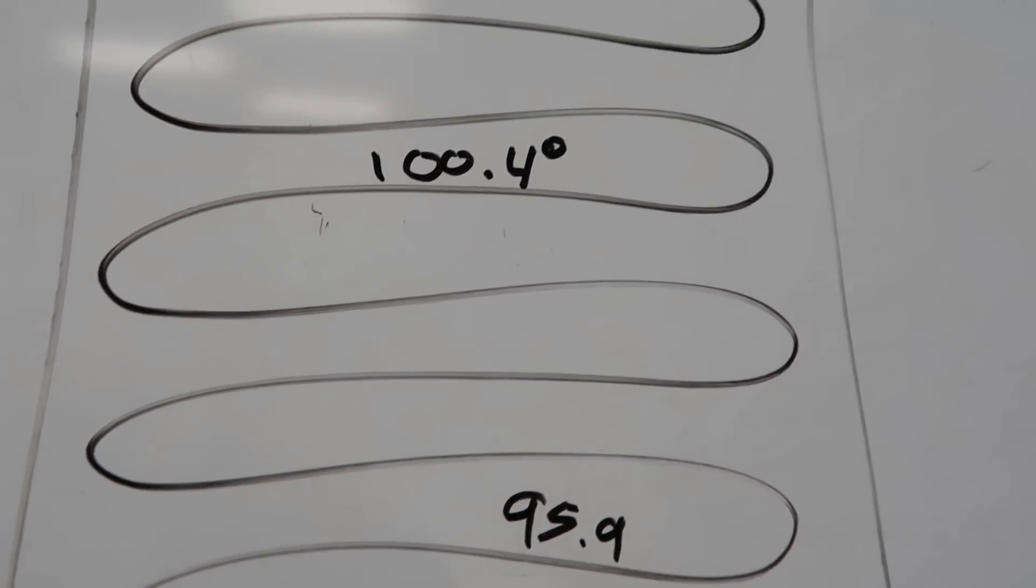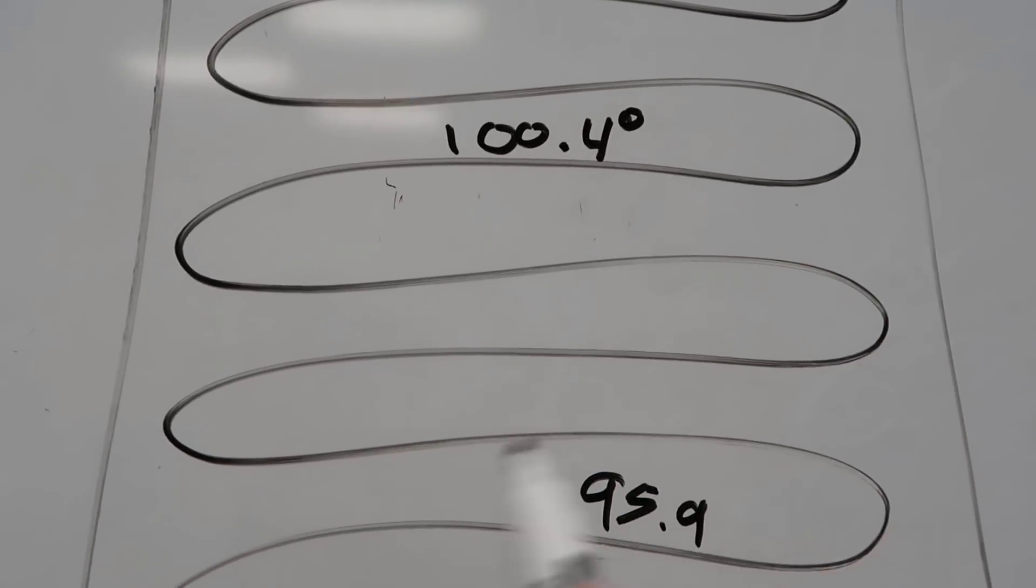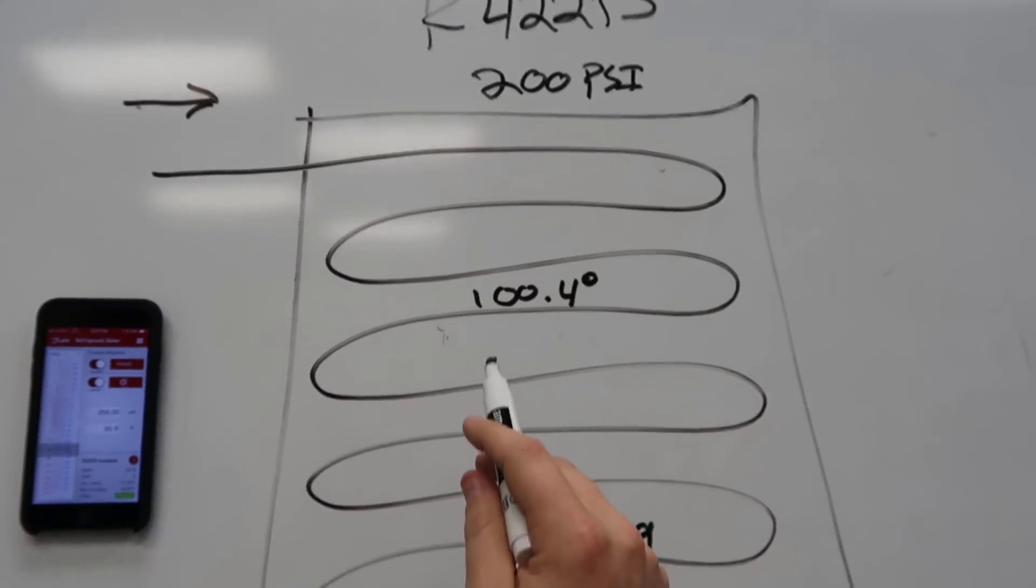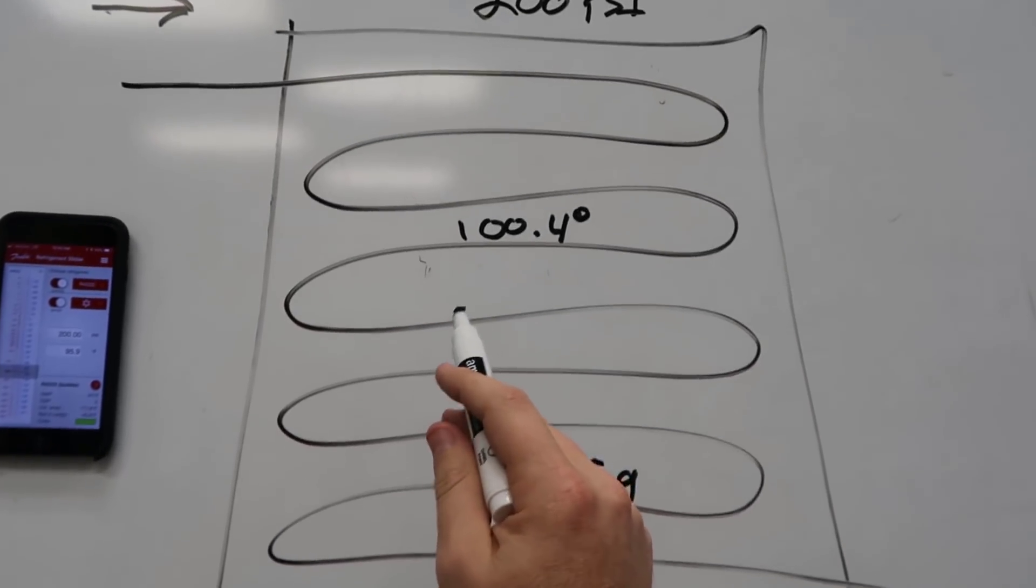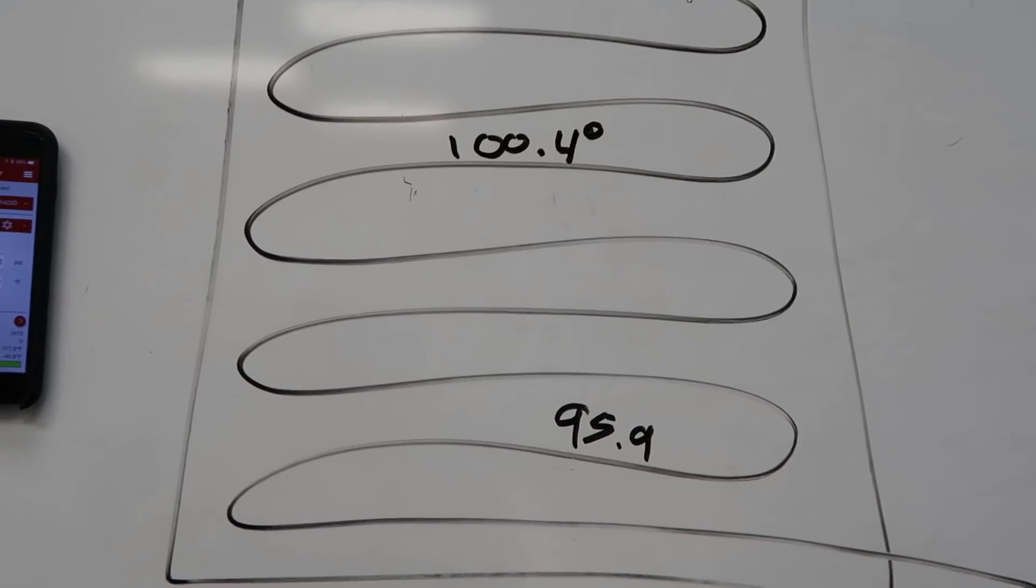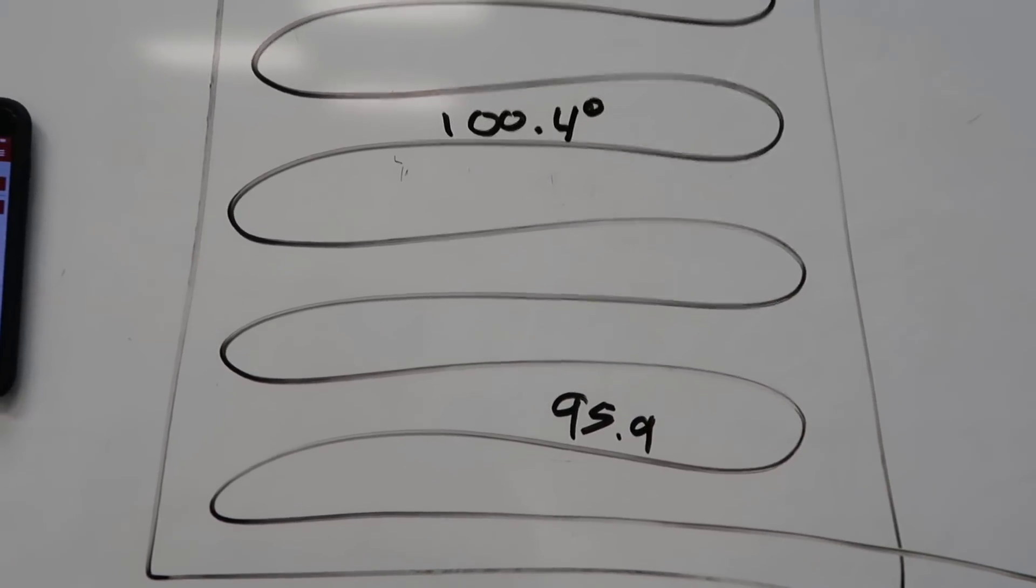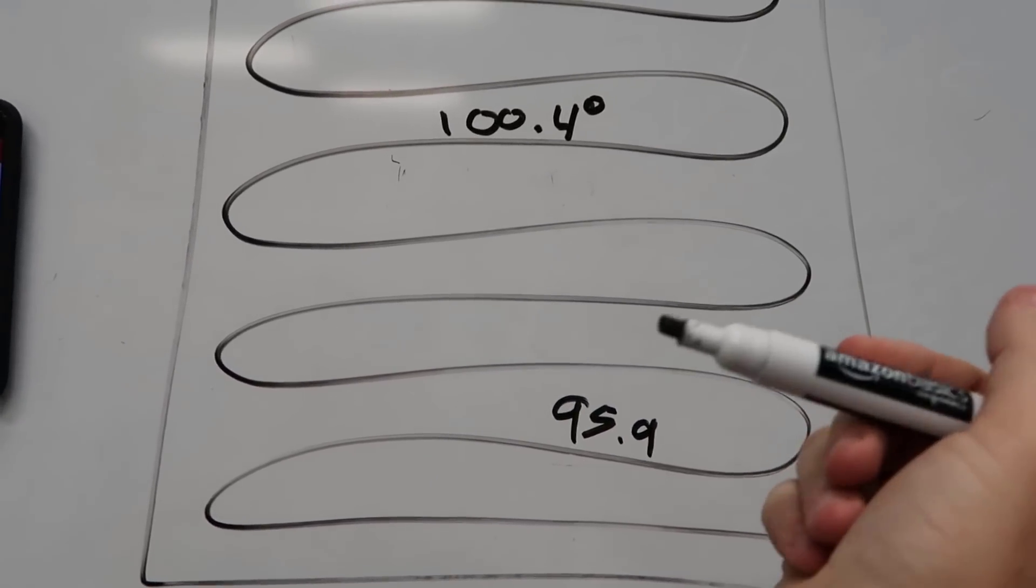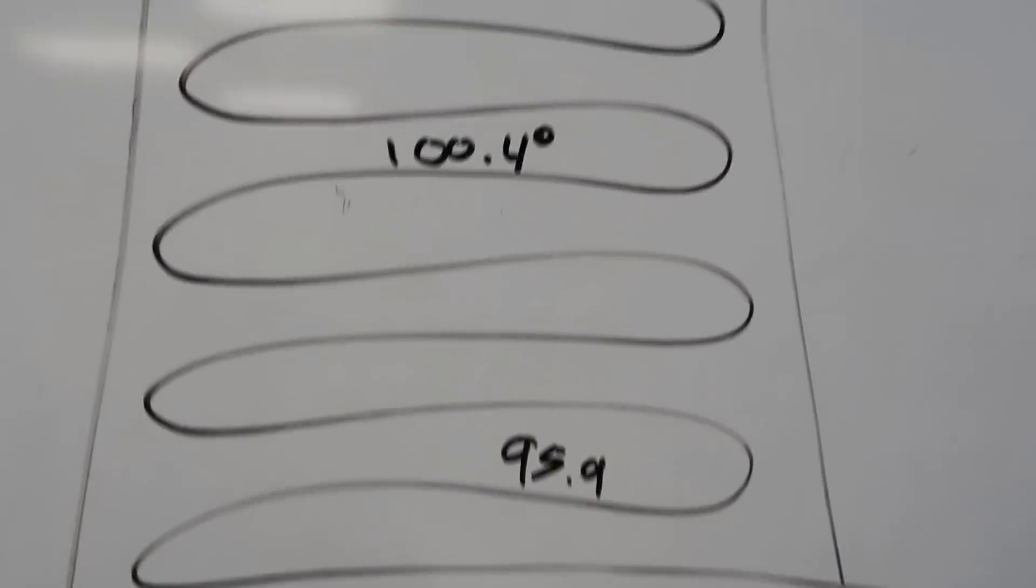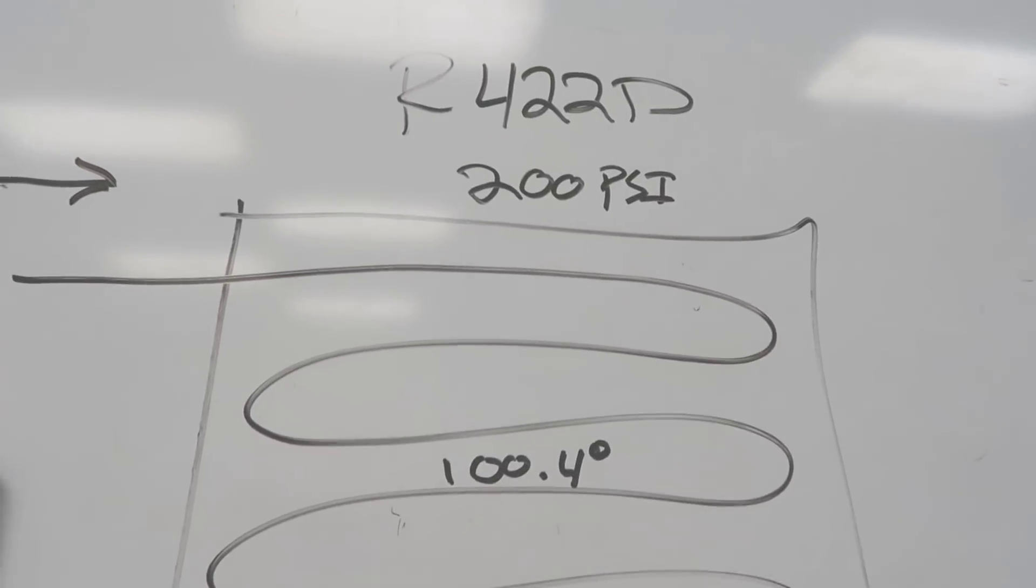So there you have it. That is glide in action. And then if we're actually looking at the temperature, if we want to say what is the temperature of this condenser coil, we would have to take an average of these two. But for calculating subcool, we would use the lower number, which is the bubble. Hopefully that's helpful. So I'm Brian Orr with HVAC School and HVACrSchool.com. Thanks for watching.